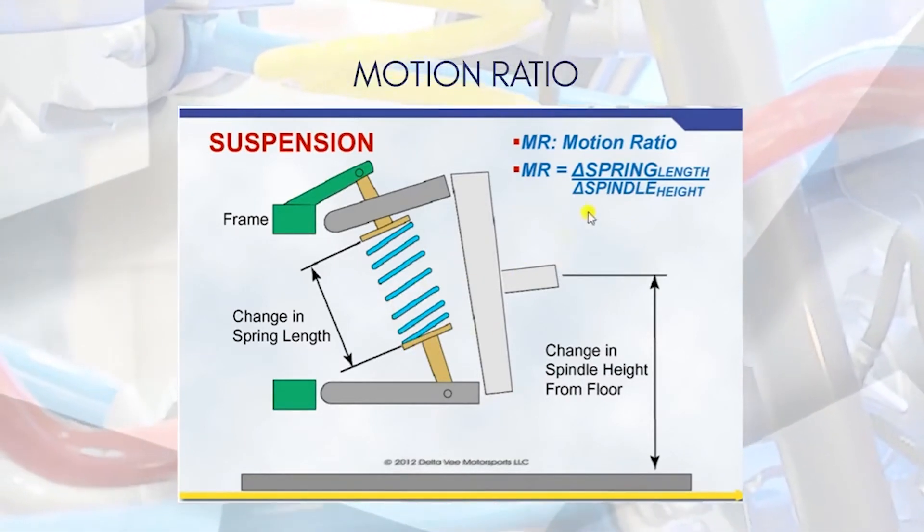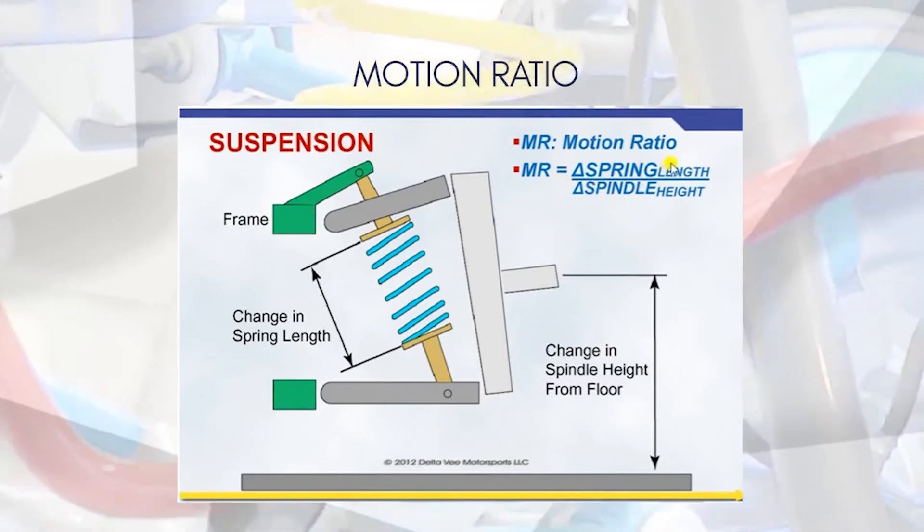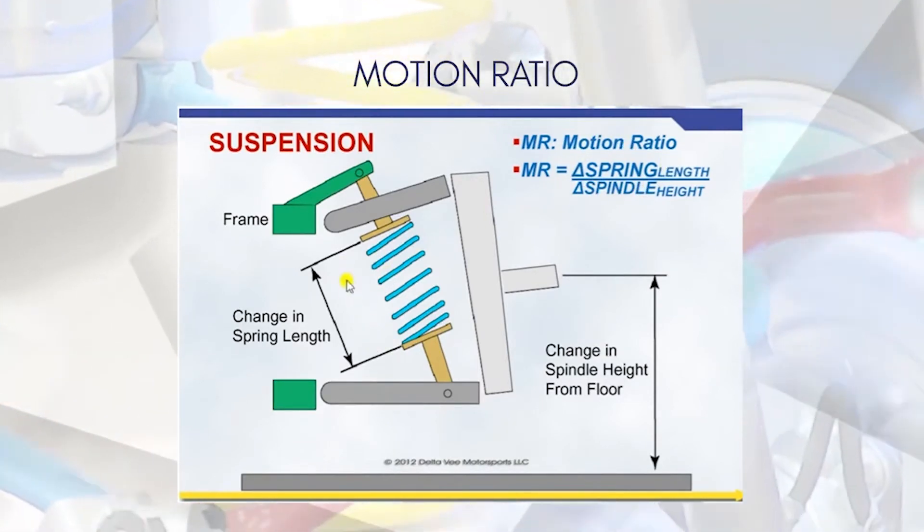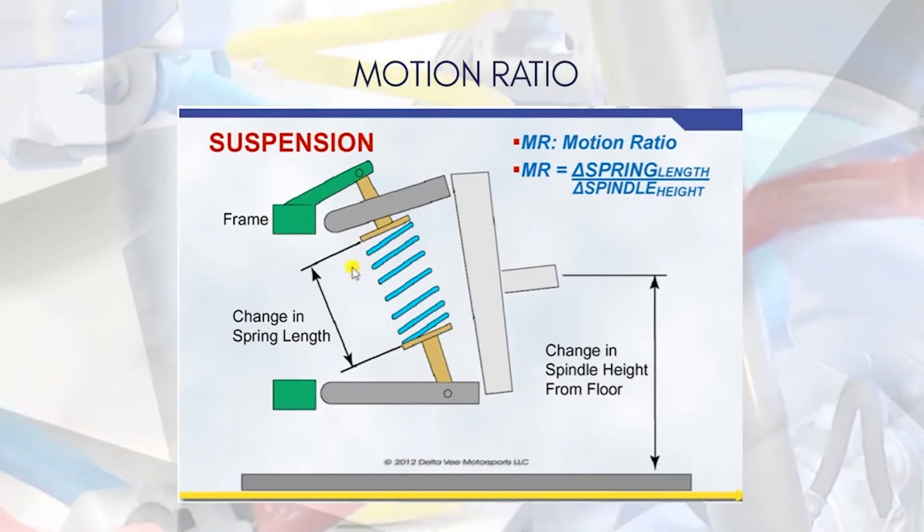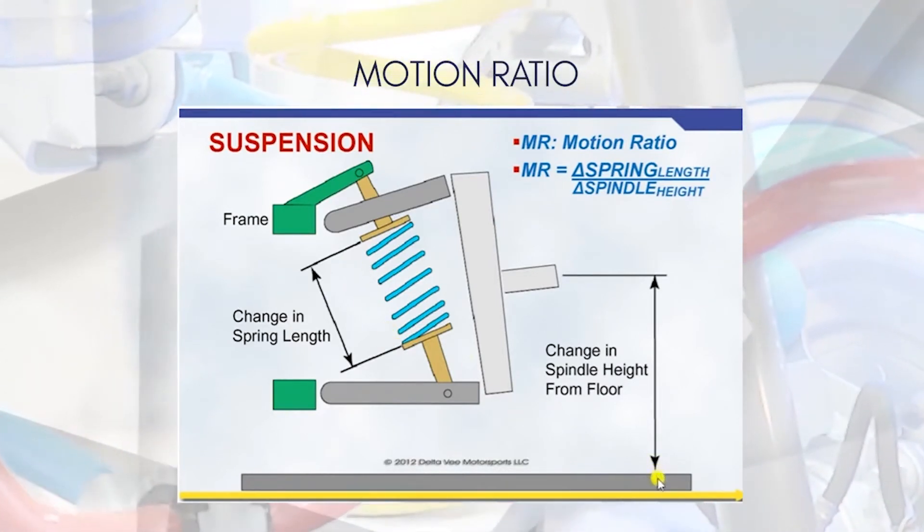Motion ratio is usually denoted as how much is the delta spring length—which is the change in the spring if it compresses—so that's the delta that we are looking for upon for every one millimeter of your wheel movement.